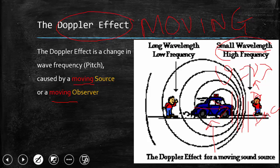Whereas, if you see this person, the source is moving away from it. These circles are widely separated, which will result in a long wavelength. And long wavelength will mean low frequency.